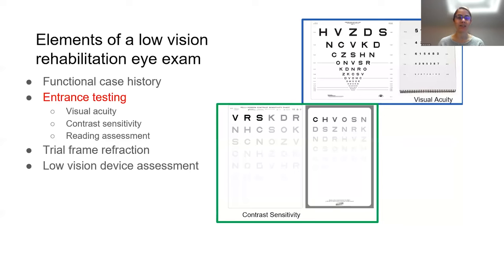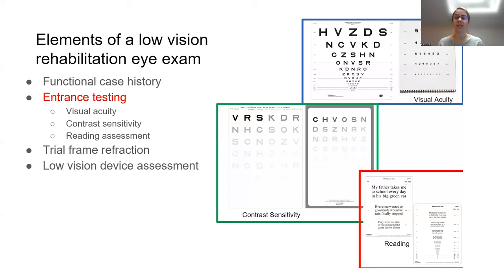We next evaluate contrast sensitivity. Most of our world isn't black on white like a standard acuity chart, so contrast is important to assess how patients perform in real-world conditions. Letters start dark and progressively get more faded, giving us a clue about how the patient might function. We also evaluate reading using special continuous text reading charts with full sentences, which is more useful than just a near-acuity test — especially when evaluating devices — as it shows whether patients are missing certain elements of words, which suggests something about their function.